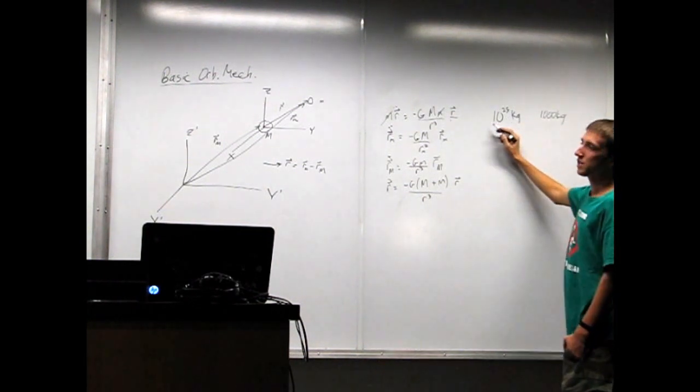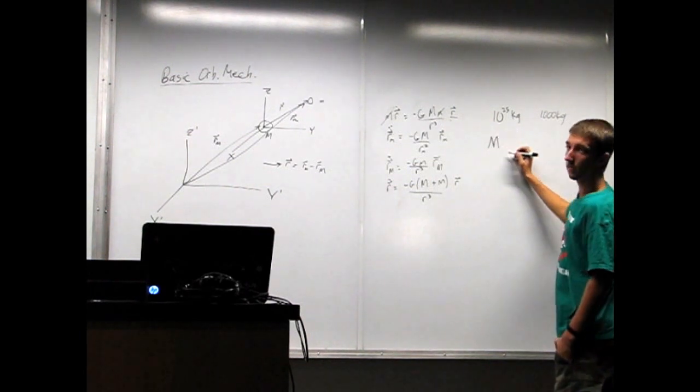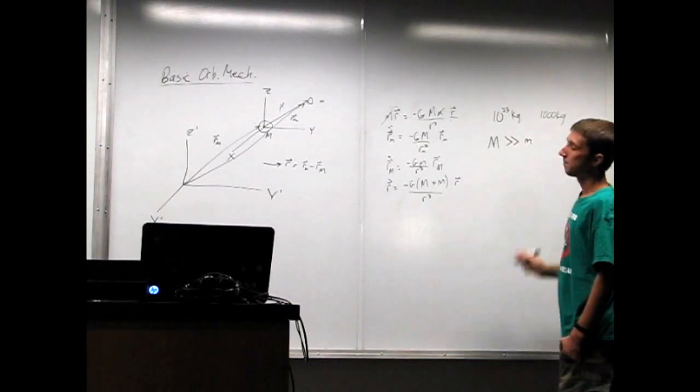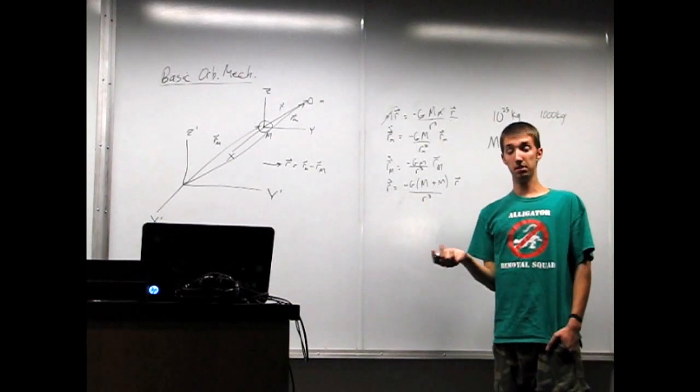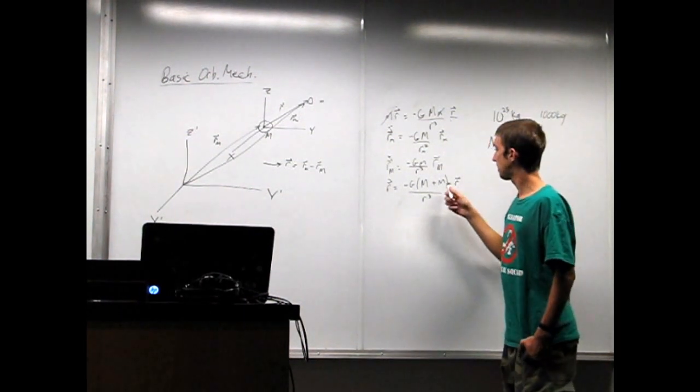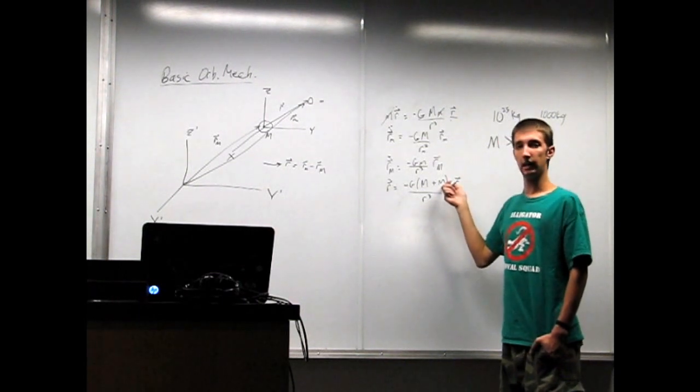And if you take this ratio, you find that, of course, common sense also tells you this, big M is much greater than little m for normal problems. So, for all intents and purposes, we can ignore or neglect this little m.